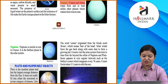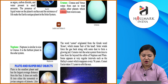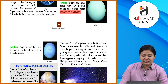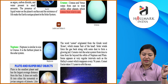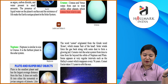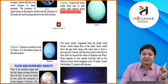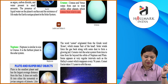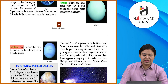Uranus and Venus rotate from East to West, unlike other planets which rotate from West to East. These are the two planets that rotate in the opposite direction compared to the rest of the planets, which rotate from West to East around the Sun.